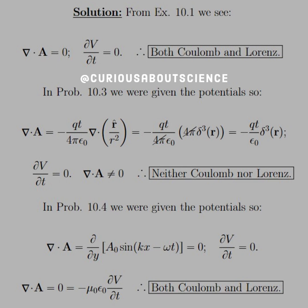From example 10.1, we saw that the divergence was 0 and the time derivative of the scalar was 0, because the scalar potential V was given as 0 and the vector potential was a piecewise function. So if we take the derivative, that gives 0. This satisfies both gauge conditions — divergence of A equals 0 and that divergence equals the negative time derivative of V, which is 0, so 0 equals 0. This is both Coulomb and Lorenz gauge.